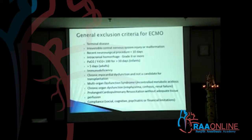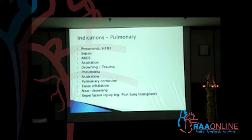These are the exclusion criteria for ECMO, which any book will give you — you'll just have to go through it. These are the pulmonary indications for ECMO, because ECMO initially started for pulmonary conditions and then was gradually switched over to cardiac conditions.